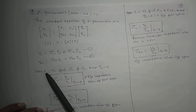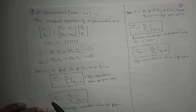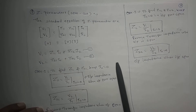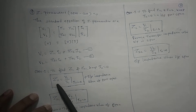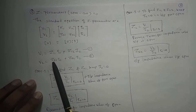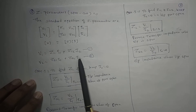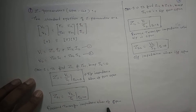Case 1: To find Z11 and Z21, we keep I2 = 0, that is the output port is open circuit. From the three variables V1, I1, and V2, we can find Z11 and Z21. From equation 1, Z11 = V1/I1 when I2 = 0. This is called input impedance when the output port is open. From equation 2, Z21 = V2/I1 when I2 = 0. This is called forward transfer impedance when the output is open.